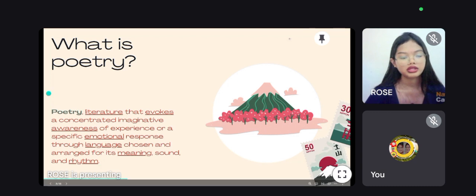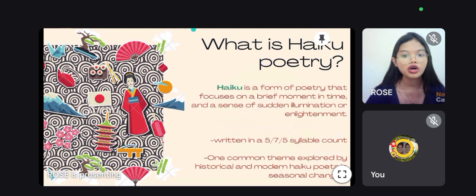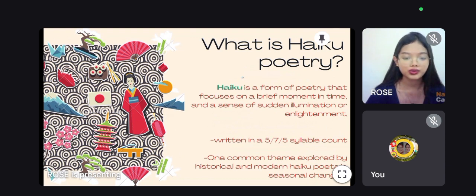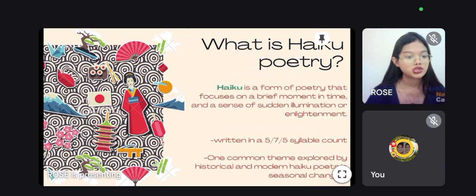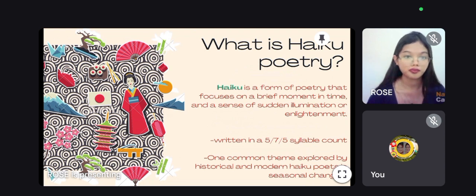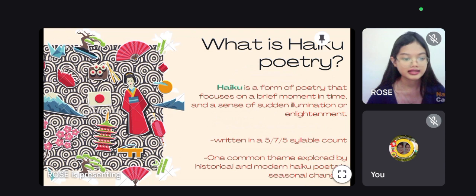So now, what is Haiku Poetry? Haiku Poetry, or Haiku, is a form of poetry that focuses on a brief moment in time, a sense of sudden illumination or enlightenment. This is a very short Japanese poem that always uses the same number of syllables — a three-line form of poetry. The first line has five syllables, the second line has seven syllables, and the third line has five syllables.